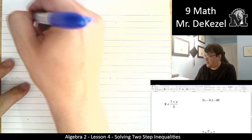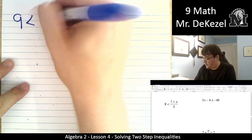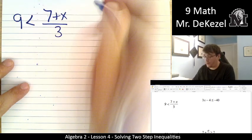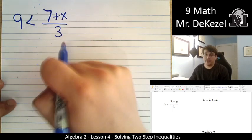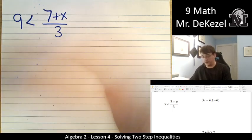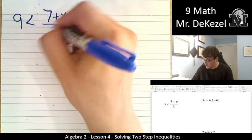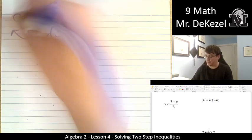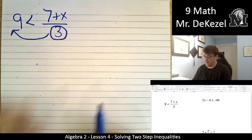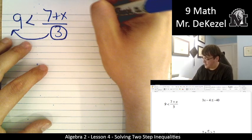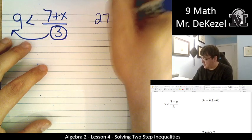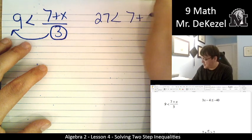We have 9 is less than or equal to 7 plus x divided by 3. We want to get x all by itself, but we've got this whole convoluted fraction thing. So let's take the 3 and move it up to the other side. Let's multiply it on the other side. So 9 times 3 is 27. That's less than 7 plus x.